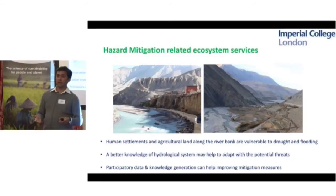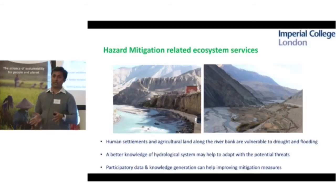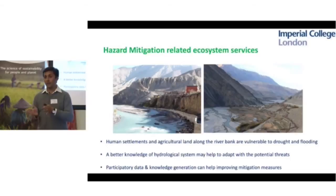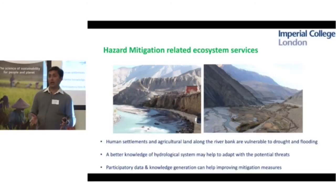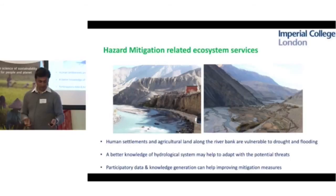The region is also very important for hazard mitigation, particularly water-induced hazards. We need to know hydrological processes, changing snowfall and rainfall patterns, so that vulnerable settlements and agricultural land can be protected. Since we don't have data, that is why we need citizen science — to mobilize local communities and stakeholders so they can participate in co-generation of data that can directly help protect vulnerable settlements as well as agricultural land.